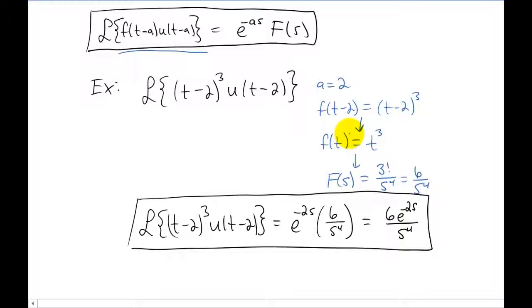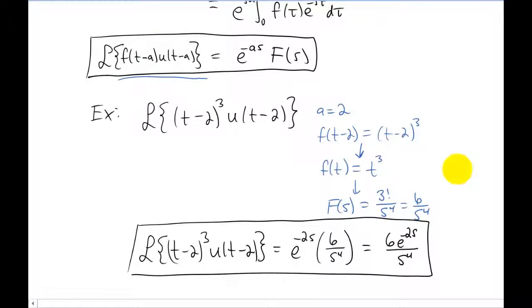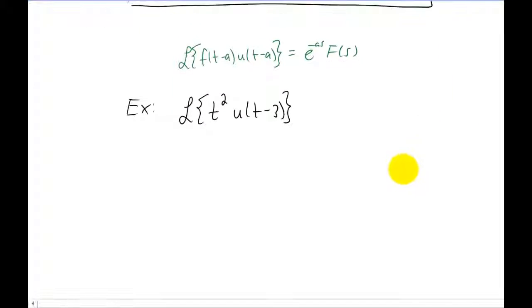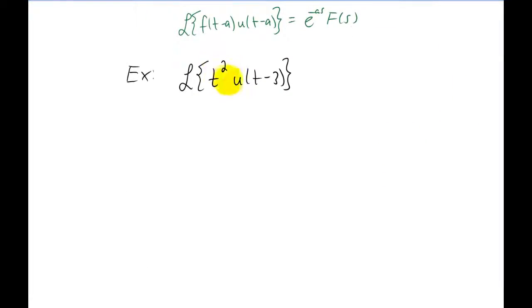Of course you're probably asking what happens if you have an example where you have a function multiplied by a step function, but those two functions don't have the exact same shift like they did on the last example. Well as it turns out, we can actually still use this same formula to do this if we want to. We can't do anything to change this step function right here. So we're pretty much stuck with an a value of three.